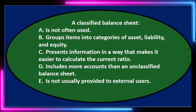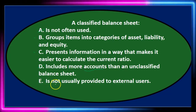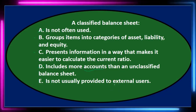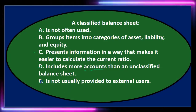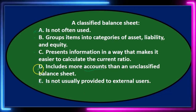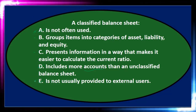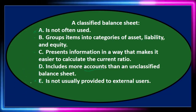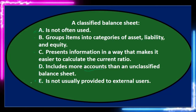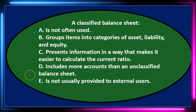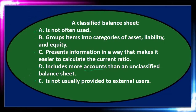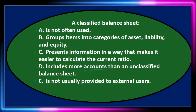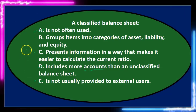E: is not usually provided to external users. That's not true because mainly when we think of financial statements, we think of external users — the classified balance sheet is the one most often used. Note that A and E are really similar: A says it's not often used, and E says it's not provided to external users. That's pretty much the same thing, so we can cross both of those out. We're left with B and C.